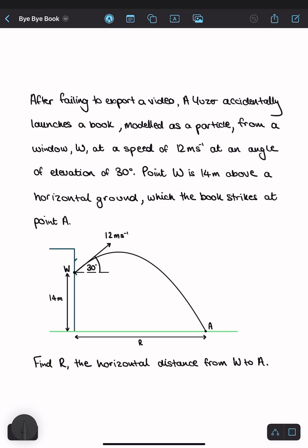Easiest way to solve any projectiles question. So after failing to export a video, a user accidentally launches a book modeled as a particle from a window, W, at a speed of 12 meters per second at an angle of elevation of 30 degrees. Point W is 14 meters above a horizontal ground, which the book strikes at point A. Find R, the horizontal distance from W to A.